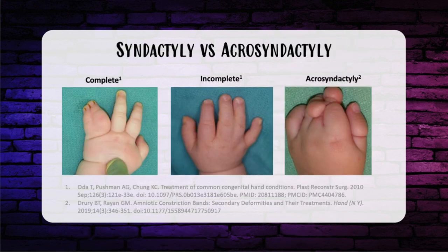This isn't to be confused with acrosyndactyly, where there's some degree of proximal web space between the fingers but the distal finger has syndactyly — always think amniotic band syndrome. There's a buddy tape effect around the fingers: proximally they have web space between them, but distally there's fusion. Versus incomplete syndactyly, where there's syndactyly along the finger from the web space distally, and the fingertip is spared.